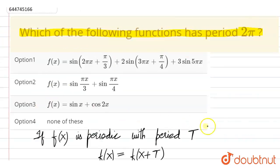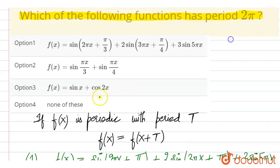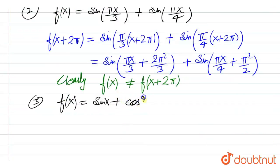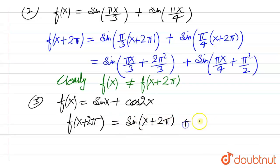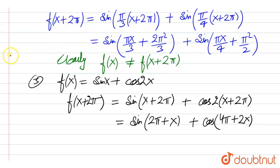Now we check option 3: f(x) = sin(x) + cos(2x). We compute f(x + 2π), which equals sin(x + 2π) plus cos(2(x + 2π)). Now, sin(2π + x) becomes sin(x), and cos(4π + 2x) is also equal to cos(2x).